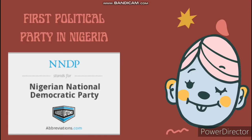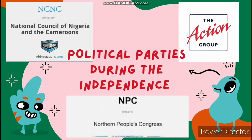The first political party established in Nigeria was the Nigerian National Democratic Party, known as NNDP. It was founded in Lagos in 1923 by Sir Herbert Macaulay, and the party remained the only party in Nigeria until 1938 when the Nigerian Youth Movement was founded by a group of young Nigerians, also from Lagos.